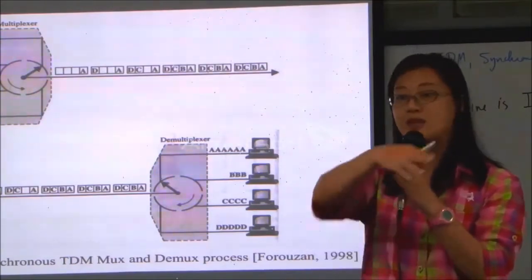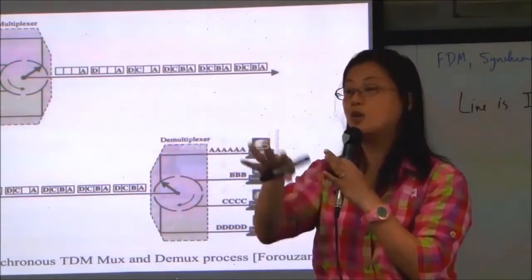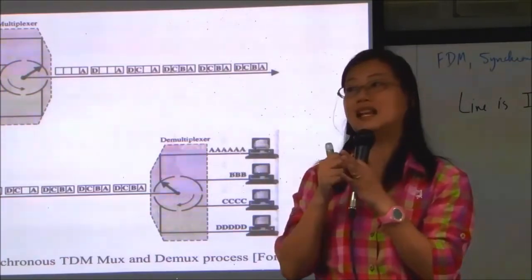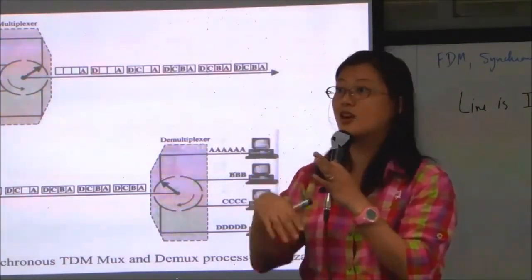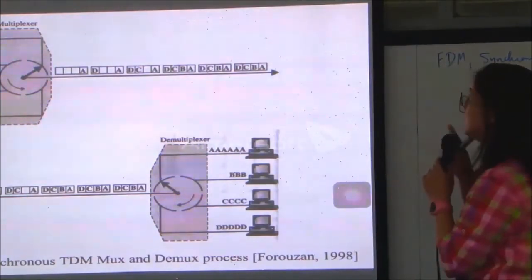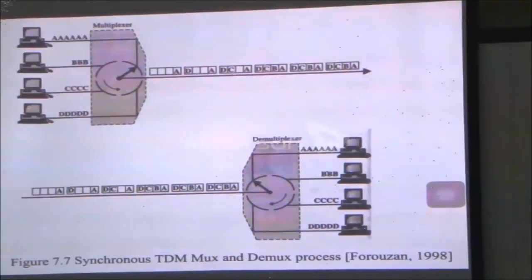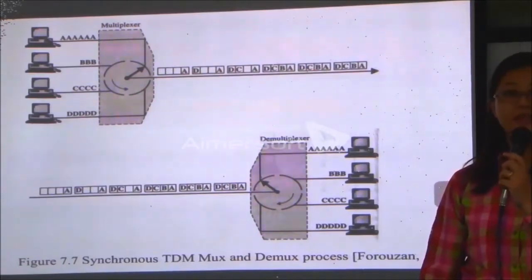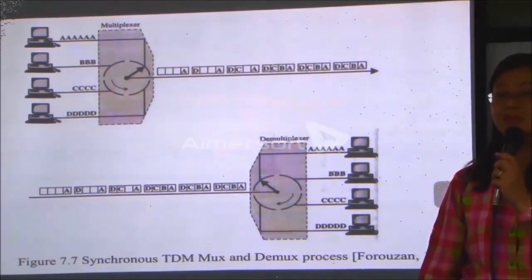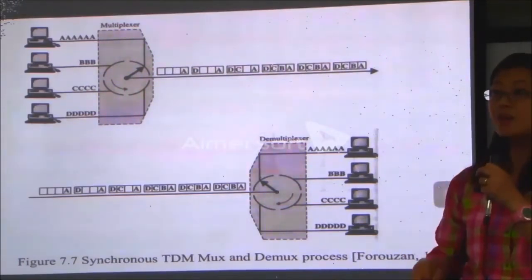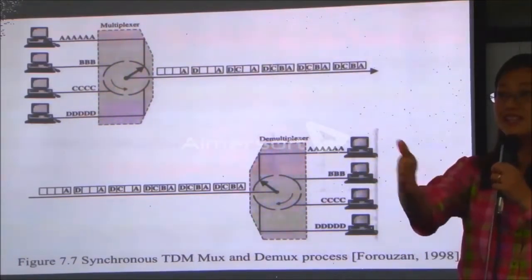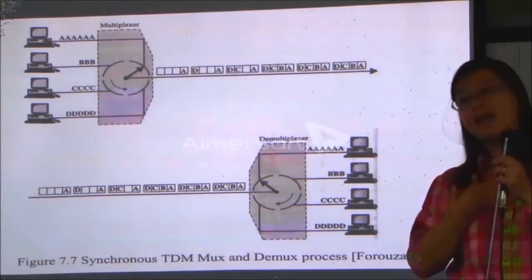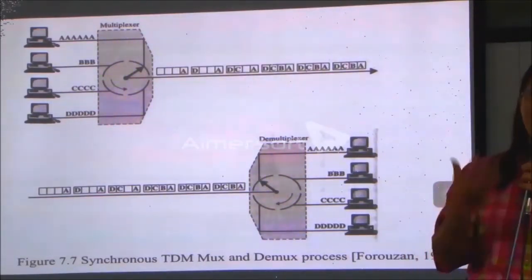Suppose after 25 slots we go back again — slot 30 would belong to person number 5 again for the next turn. This is the good point about synchronous TDM: everything you are sending is data. If everyone has something to speak, it's very efficient — everyone talks for one minute and all frames contain data. You don't have to identify yourself with 'I am Pongporemat' or 'I am Ponsini.'